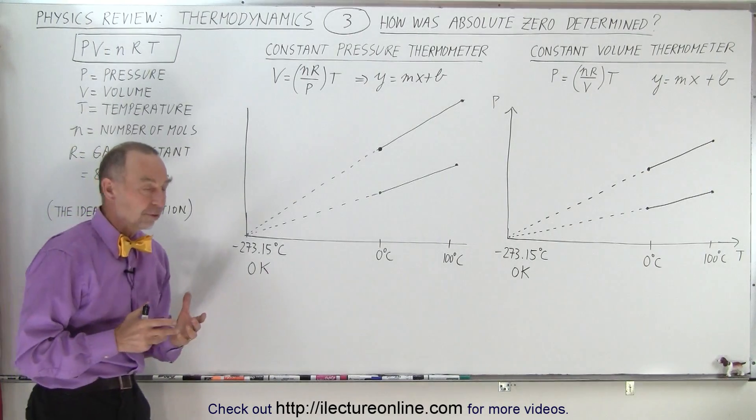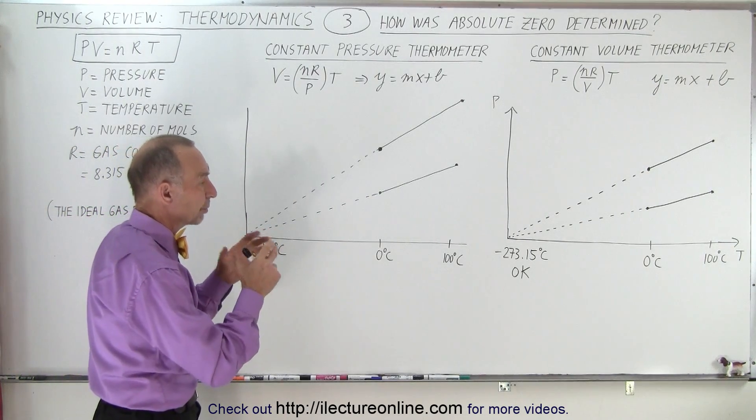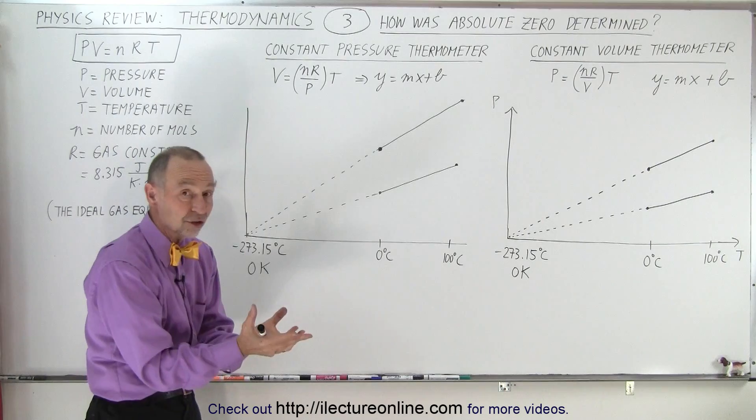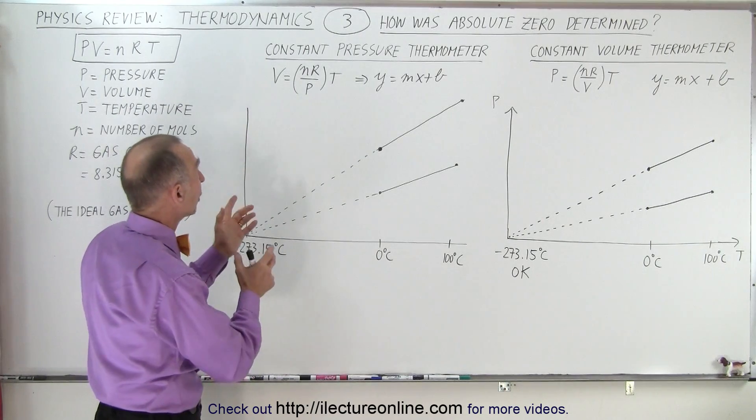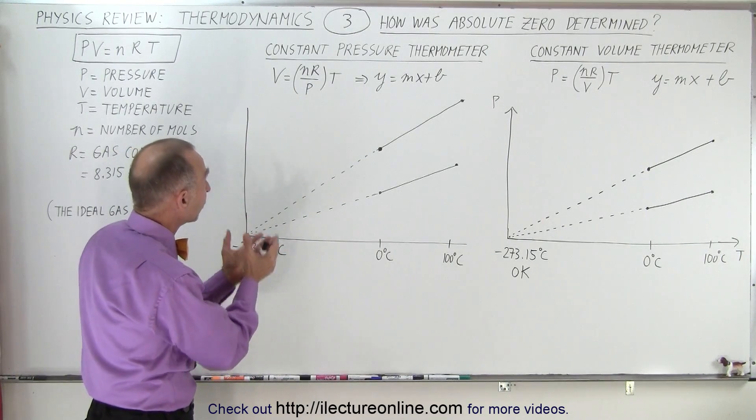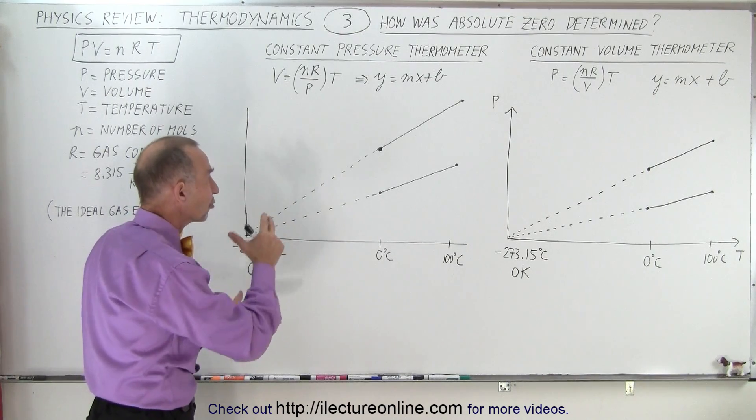So we can set up two devices, one that's called a constant volume thermometer, where the volume of the gas doesn't change but the pressure changes, and one where we have a constant pressure thermometer, where the pressure doesn't change but the volume changes.